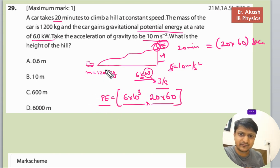After that, we know that the potential energy at this level will be mgh. So we equate this: mass is 1200, gravitational force is 10, and height we have to find.